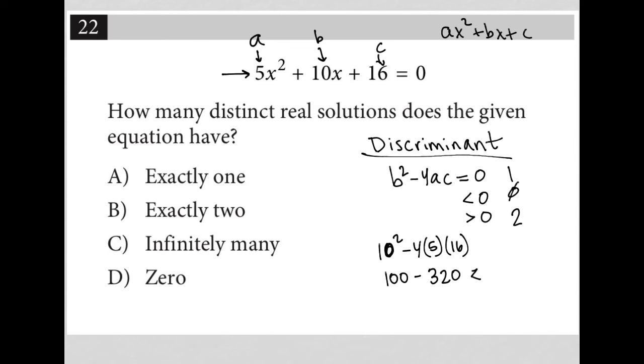And this is going to definitely be less than zero. 100 minus 320 is negative 220. So negative 220 is less than zero, which means we're in this category where we have no real solutions. So our answer here is D. There are zero real solutions to this given equation.